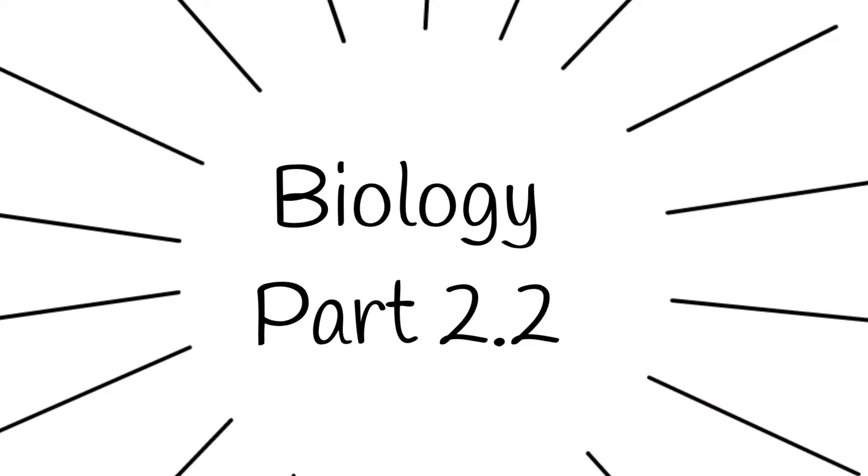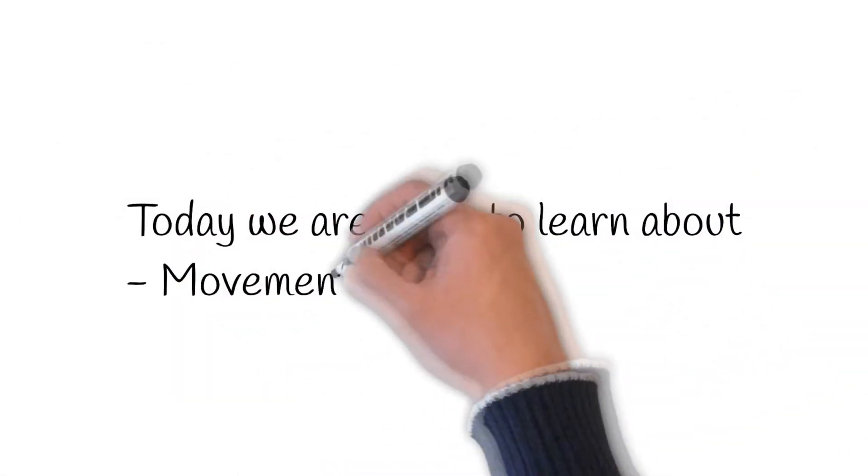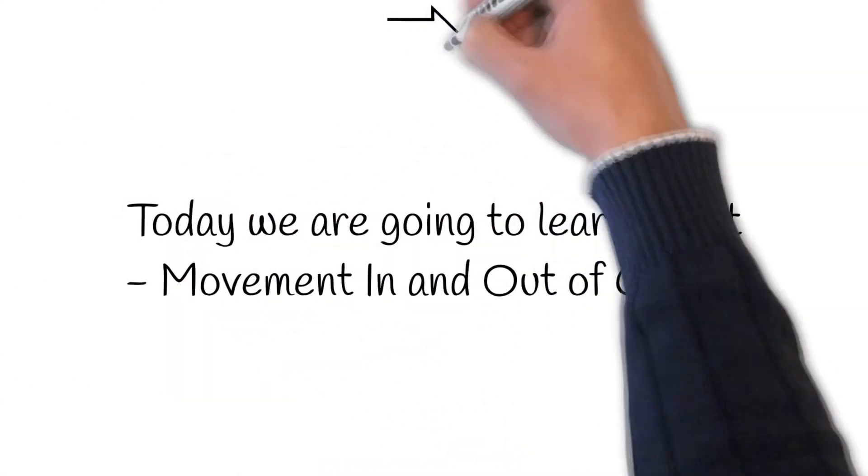Welcome to this video in our series on IGCSE Coordinated Sciences. This is Biology 2.2. In today's lesson, we will be learning about movement in and out of cells.